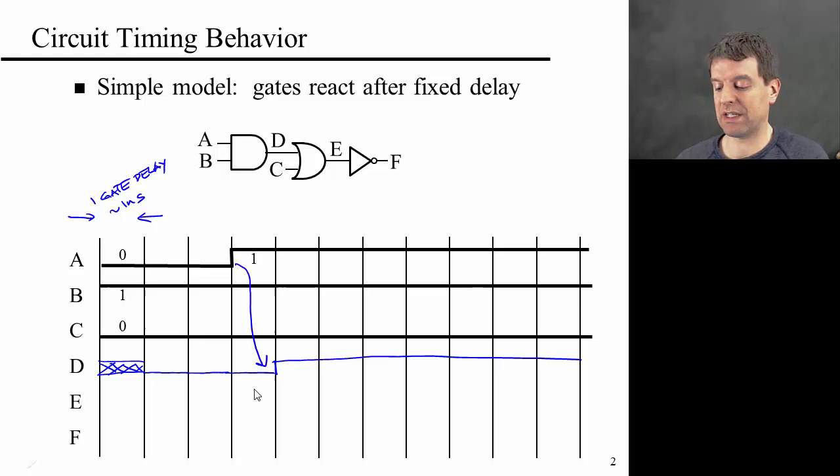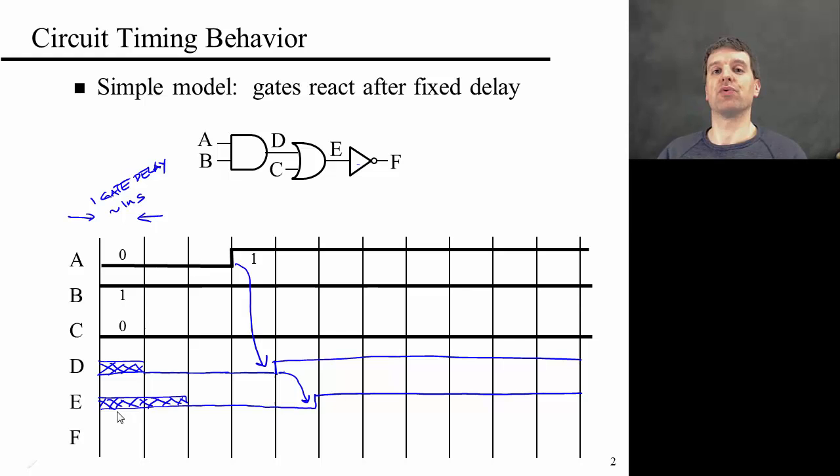So this change here propagated with one gate delay into here. We can do a similar analysis for E. So E is effectively the OR of D or C. And E remains low up to here and then goes up and stays 1. And again, this change propagates to here. And in fact, even though I drew this as being low, I actually don't know what the value of E is for the first two gate delays, because the signal has to propagate through the circuit. And it follows D with one gate delay.